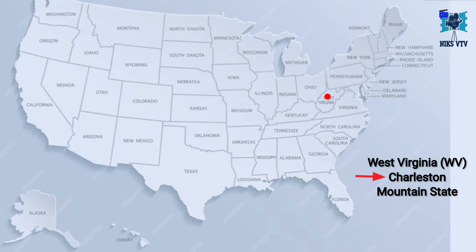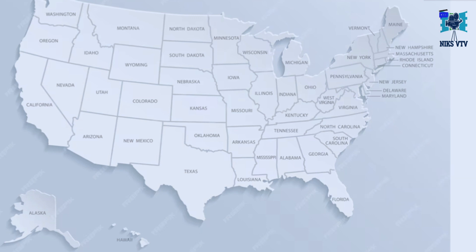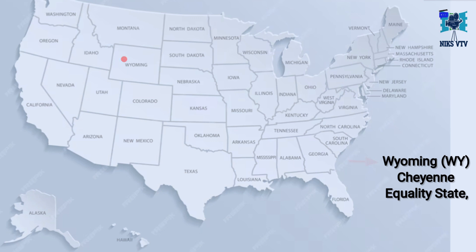Next state is West Virginia, its abbreviation is WV, its capital is Charleston, its time zone is EST, and its nickname is Mountain State. Next state is Wisconsin, its abbreviation is WI, its capital is Madison, its time zone is CST, and its nickname is Badger State. Next state is Wyoming, its abbreviation is WY, its capital is Cheyenne, its time zone is MST, and its nickname is Equality State.